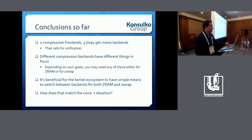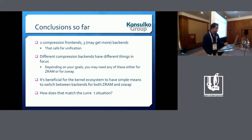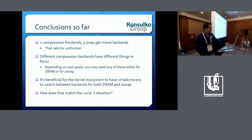So we have ZSWAP and ZRAM, and at least three back ends — and possibly more — and that calls for unification, independence, and well-defined APIs. Also, as different compression back ends have different things in focus and you may have different goals, you may need an unexpected back end for your ZRAM or ZSWAP application. It's beneficial for the kernel ecosystem to have simple means to switch between back ends for both ZRAM and ZSWAP.